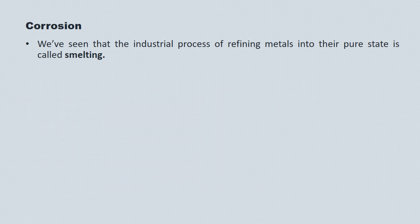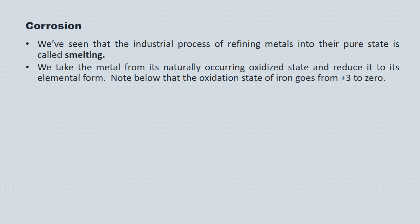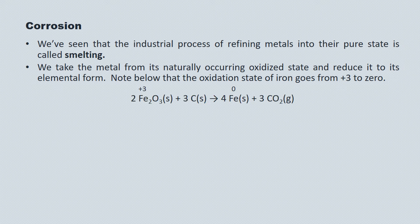We've seen that the industrial process of refining metals into their pure state is called smelting. We take the metal from its naturally occurring oxidized state and reduce it to its elemental form. You'll notice in the reaction that the oxidation state of the iron in this case goes from plus three to zero, so we're introducing electrons to it by reducing it.